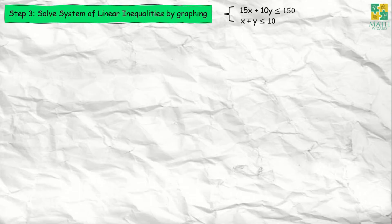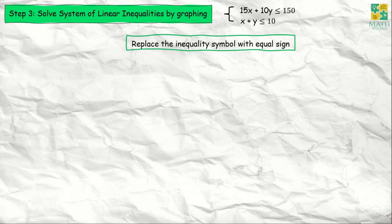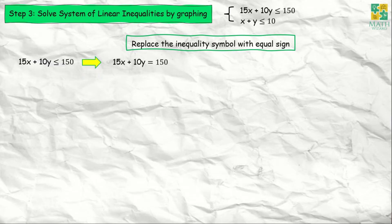Step number 3 is we need to solve the system of linear inequalities by graphing. First, we replace the inequality symbol with an equal sign. So 15x plus 10y ≤ 150 becomes 15x plus 10y = 150. And x plus y ≤ 10 becomes x plus y = 10.